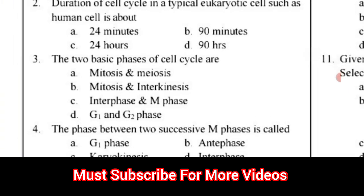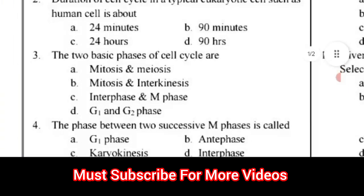Question number 3: The two basic phases of cell cycle are? Options: A) mitosis and meiosis, B) mitosis and interkinesis, C) interphase and M phase, D) G1 and G2 phase. The correct answer for question number 3 is option C.